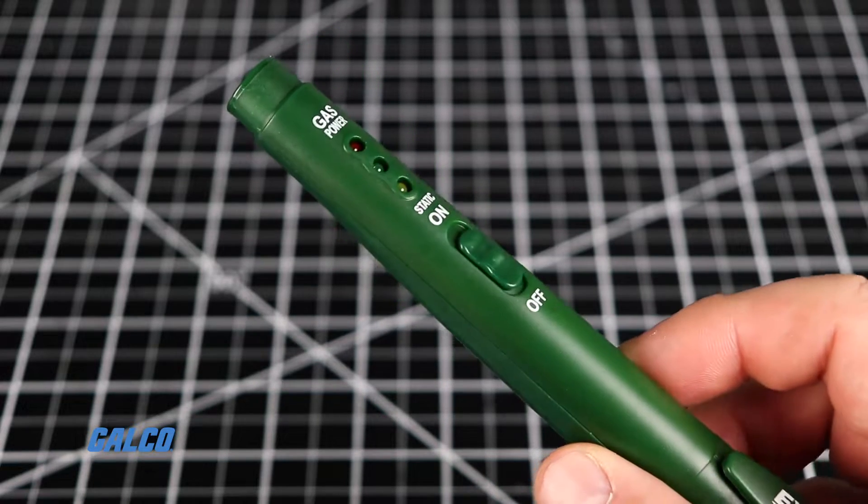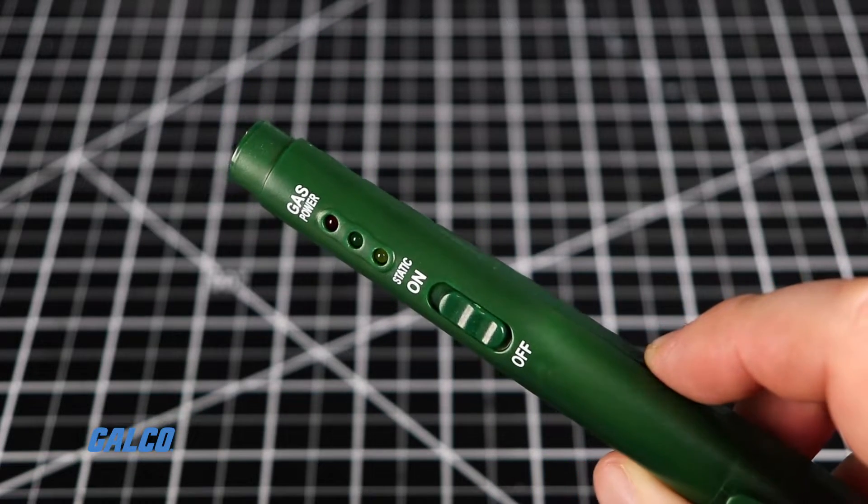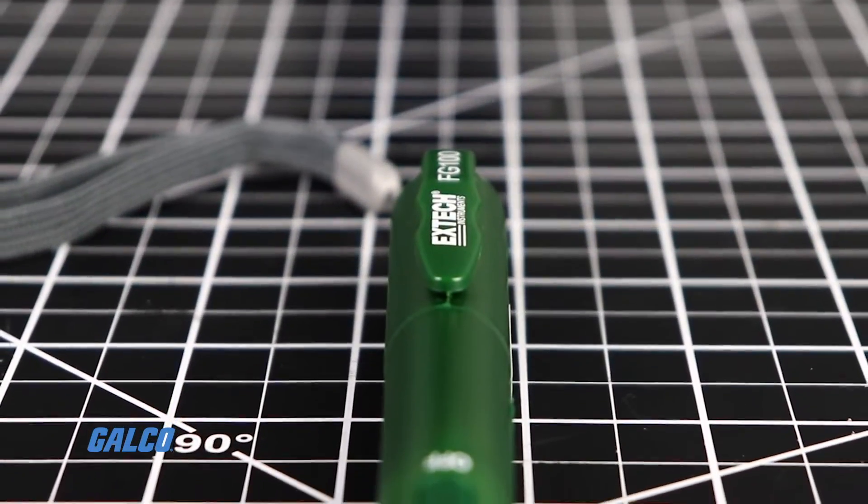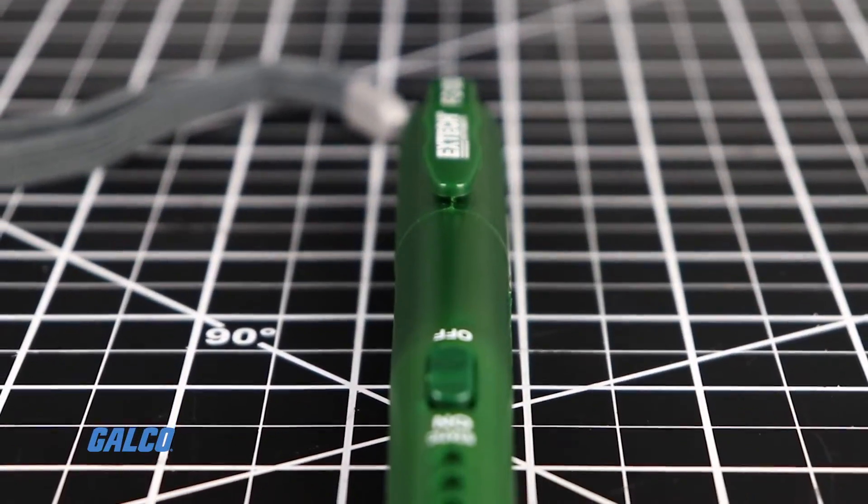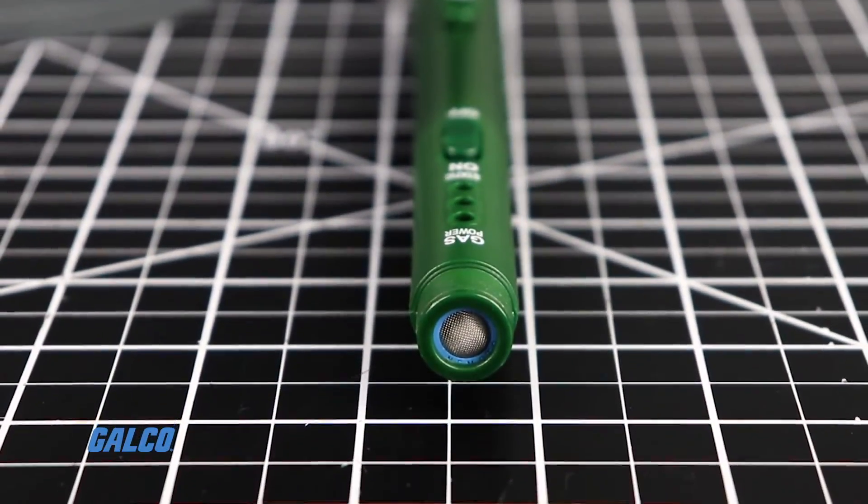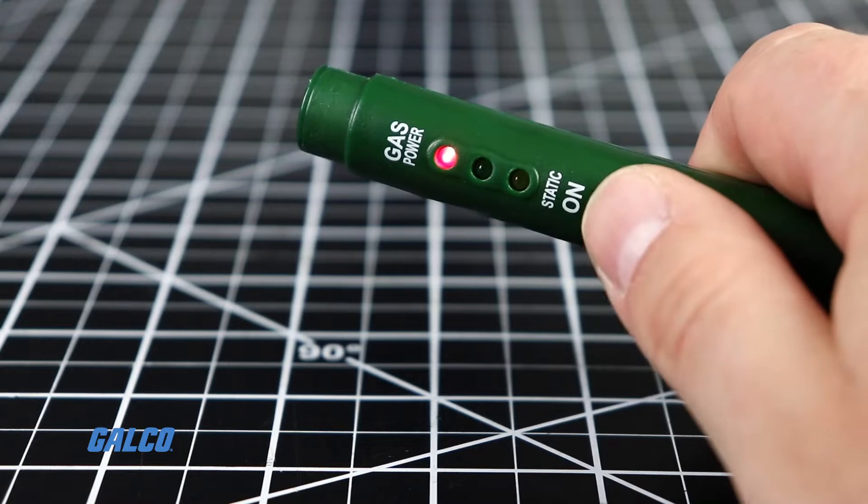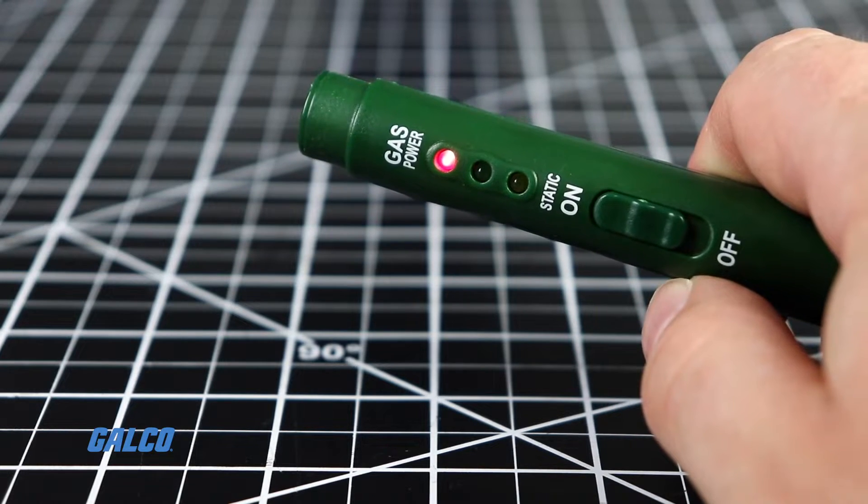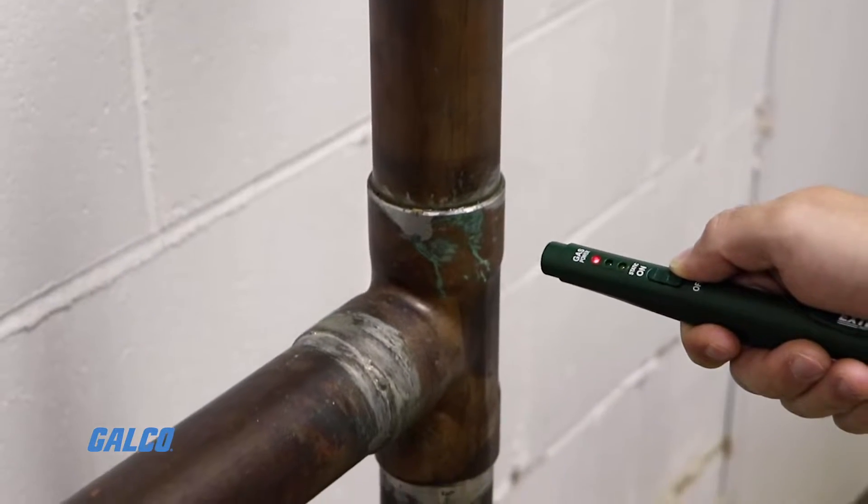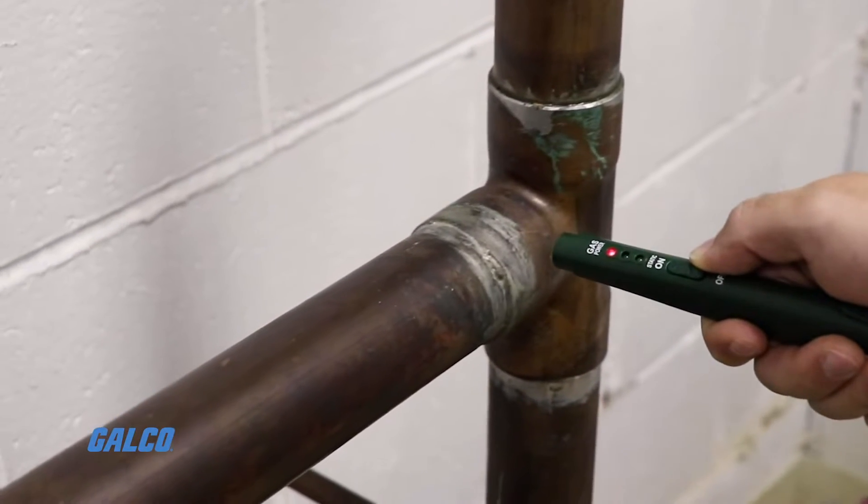Extech's FG100 Combustible Gas Leak Detector is a pen-sized test instrument designed to detect liquefied natural gas and liquefied propane gas from 500 to 6500 parts per million. Equipped with both audible and visual alarms, the FG100 notifies users of the presence of combustible gas leaks in the immediate environment.